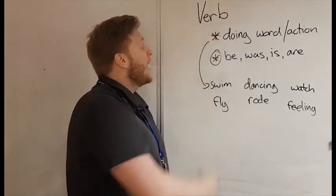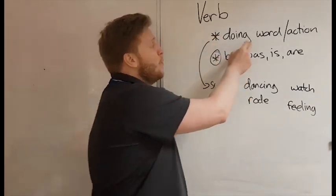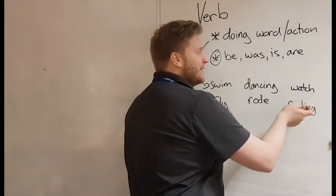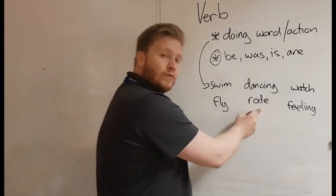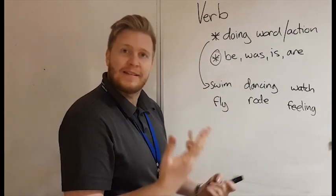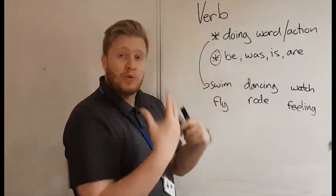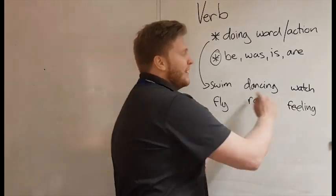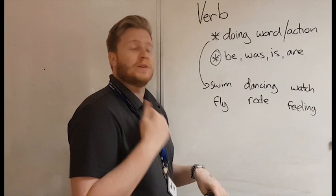Next one we're looking at is a verb. A verb quite simply is a doing word or an action. So things like swim, dancing, watch, fly, rode, feeling. I'm feeling sad. So all things that you can do or an action that is being done. Be careful, some people think they're just ing words but it depends what tense you're in.